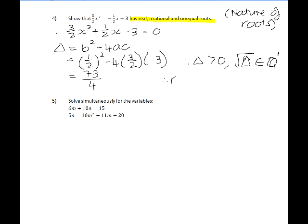So therefore, the roots are real because the moment delta is positive, the roots are real. Because delta is irrational, the square root of delta is irrational, we know that the roots will be irrational. And because delta is not actually equal to zero, it means that the roots will be unequal.